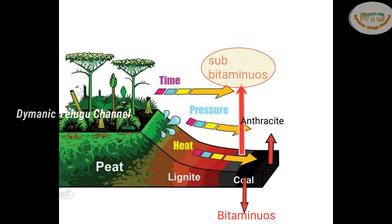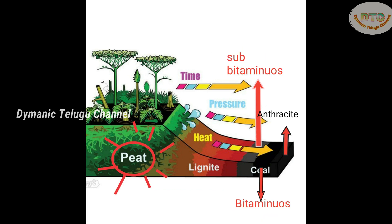The first stage is peat. There is plant material in peat — leaves and branches. Peat is a perfect example of the first stage of coal formation.